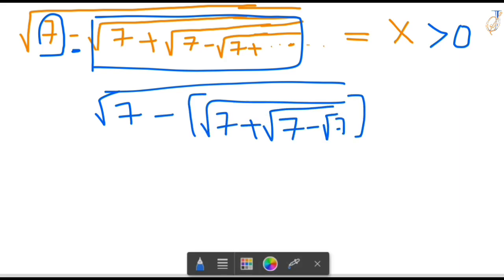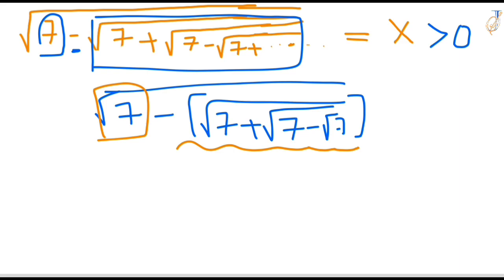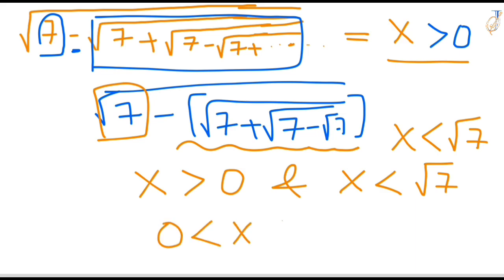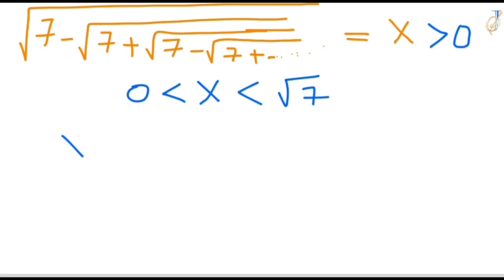Also, if you observe here, root 7 is subtracting some term. That means the X value is definitely less than root 7. So what we observe is: X is greater than 0 and X is less than root 7. Written as a domain expression, it should be 0 less than X less than root 7.